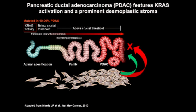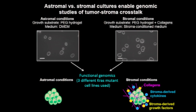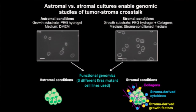To begin to study this, I wanted to understand how the diverse secreted factors derived from stromal fibroblasts influence the epithelial compartment with respect to gene expression. I developed what I'm calling a stromal culture system. I embed pancreatic cancer cells in a 3D polyethylene glycol-based hydrogel together with collagens, major components of the extracellular matrix in pancreatic cancer. For soluble stromal cues, I use conditioned media from patient-derived stromal fibroblasts as the growth medium. As an astromal control, I grow cells in the same 3D PEG-based hydrogel with no collagens and use DMEM as the medium.